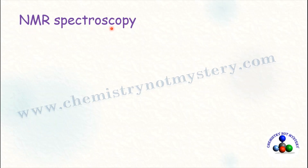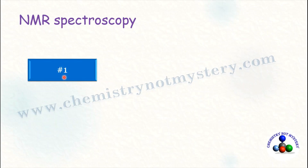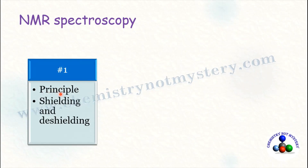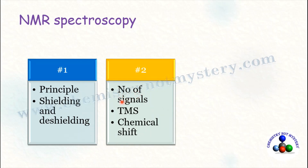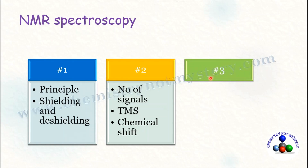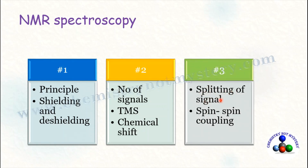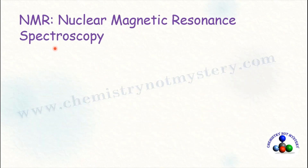Today we are going to discuss NMR spectroscopy. This is the first lecture of NMR. In this lecture I am going to discuss principles of NMR spectroscopy and what is shielding and deshielding. In the second lecture I will discuss how to calculate the number of signals in NMR, what is TMS, and what does it mean by chemical shift. In the third lecture I will discuss splitting of signals and spin-spin coupling. So let's start with the introduction of NMR spectroscopy.